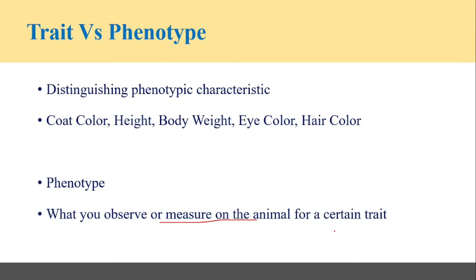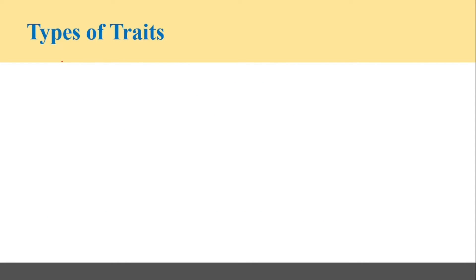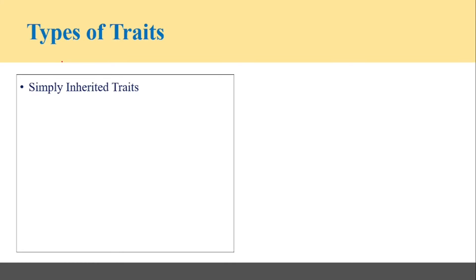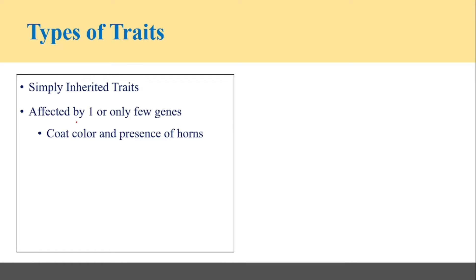Now let's start today's topic: types of traits. Traits can be classified on the basis of how they are inherited, or on the basis of how they are expressed. On the basis of inheritance, traits can be classified as simply inherited traits and polygenic traits. Simply inherited traits are also called monogenic traits, and these are traits which are affected by one or only a few genes — in most cases only one gene, which is why they are called monogenic traits. Examples in livestock include coat color and presence of horns.